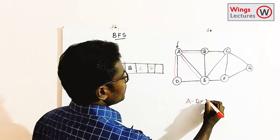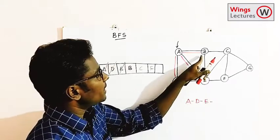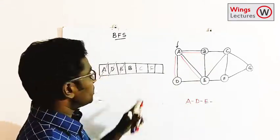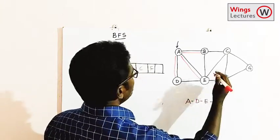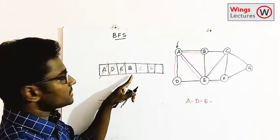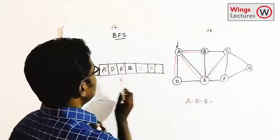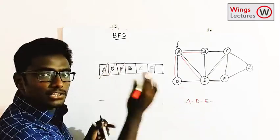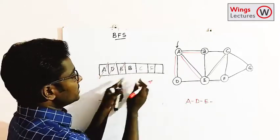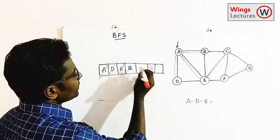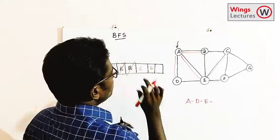E is now visited. Next is B. From B the adjacent vertices are A, E, and C. A is already visited, E is already visited, and C is already in the queue, so there is no need to visit any new node from B.